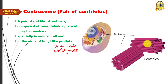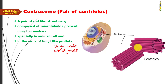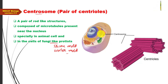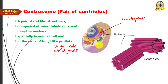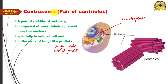Regarding centriole structure: centrioles consist of a pair of rod-shaped structures placed at right angles to each other. These two rods together are called a centrosome. The region near the nucleus where the centrosome is located is called the centrosphere. Remember: centrosphere is present near the nucleus — not near the cell membrane, Golgi complex, or any other organelle.